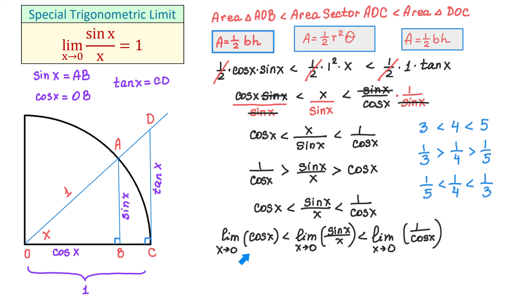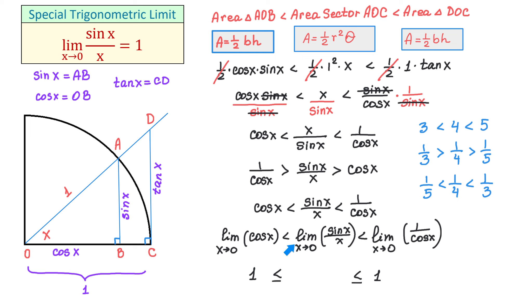To find the limit of cosine(x) as x approaches 0, we use direct substitution: cosine(0) equals 1, so the left side becomes 1. On the right, cosine(0) is 1 and 1 divided by 1 is 1, so the right side also becomes 1. We see that as x approaches 0 these two limits are equal, so we can add the equal sign. Now how can we prove that the limit in the middle is also 1? To prove this, let's take a look at the squeeze theorem.